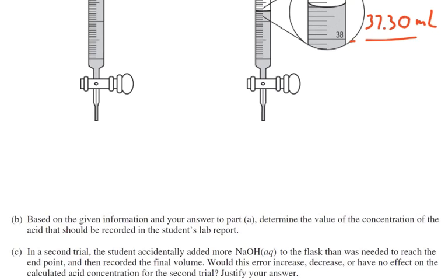Okay, part B. Based on the given information and your answer to part A, determine the value of the concentration of the acid that should be recorded. Okay, well we can do this stoichiometry. Because it's said it's a monoprotic acid and NaOH has one OH, then our moles of acid equal the moles of base.